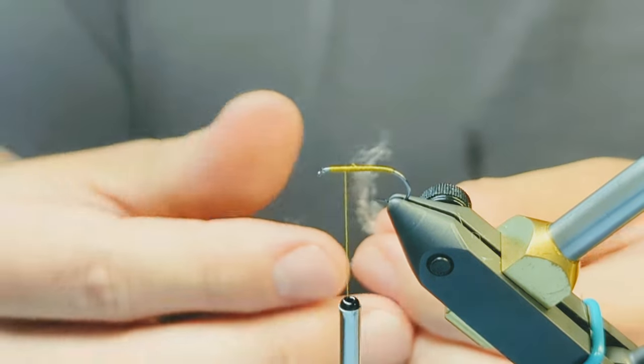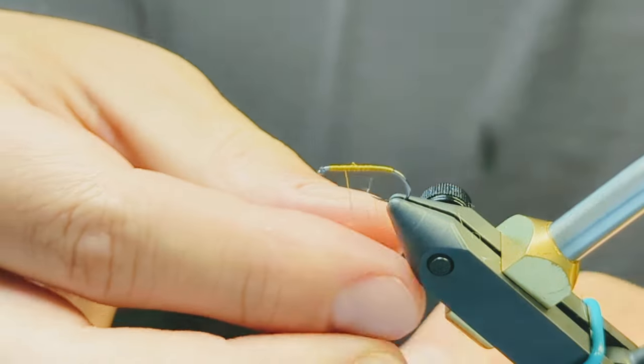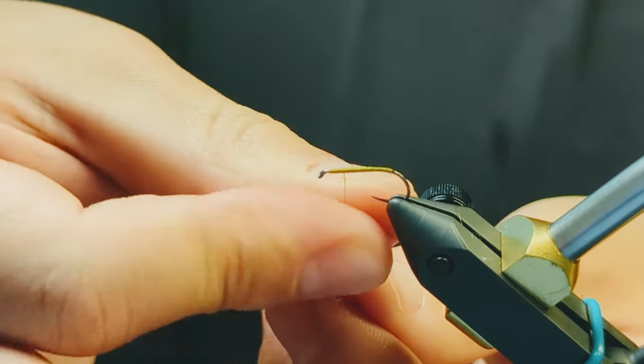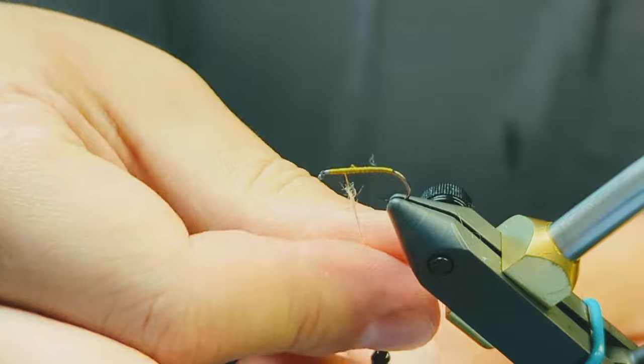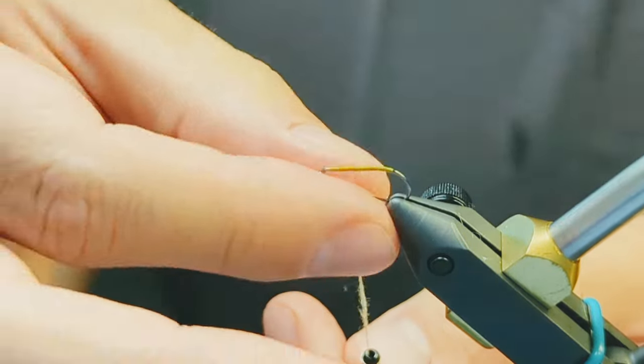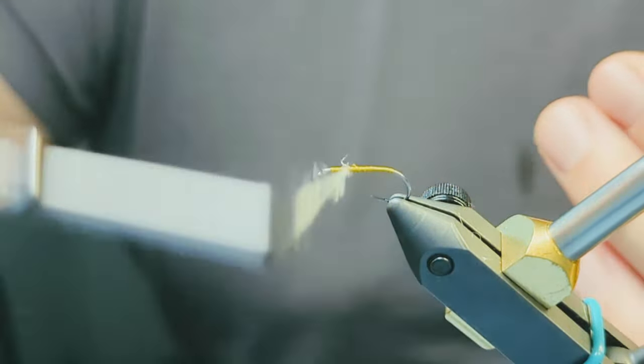Form a really thin dubbing noodle for the thorax. This little bulb will give the soft hackle a bit of support while the fly swings so that the hackle fibers stay splayed out and form a teardrop around the hook.